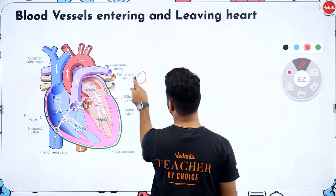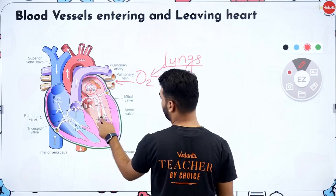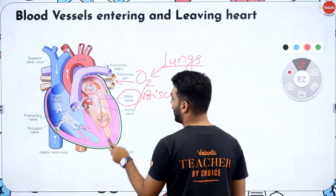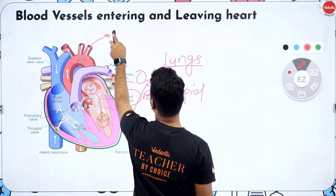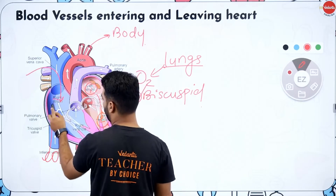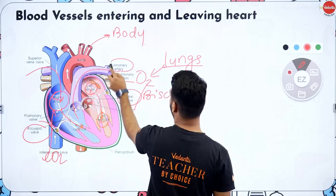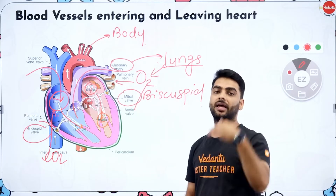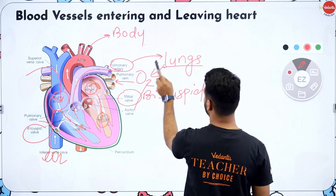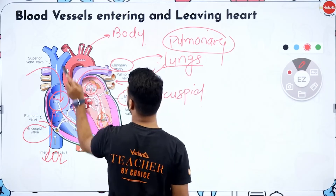Oxygenated blood comes from the pulmonary vein (from the lungs) into the left atrium, then to the left ventricle via the bicuspid (mitral) valve, and out to the entire body through the aorta. Deoxygenated blood returns through the inferior and superior vena cava into the right atrium, then to the right ventricle via the tricuspid valve, and through the pulmonary artery back to the lungs. Lungs-to-heart-to-lungs is pulmonary circulation; heart-to-body-to-heart is systemic circulation.